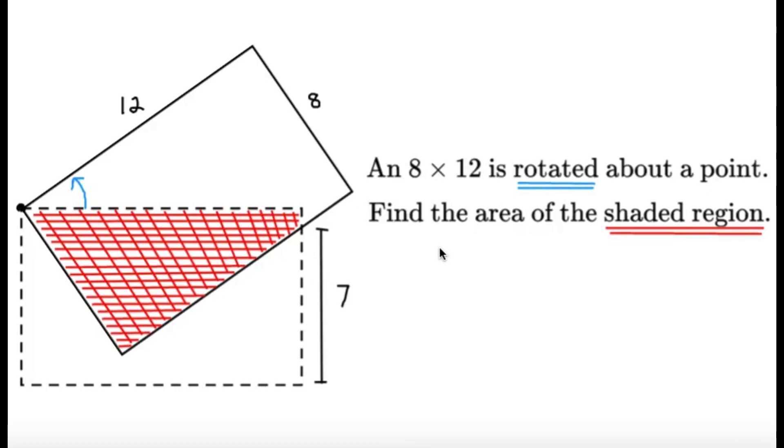Hello, hello! It's Tumplet here. Here's an item on geometry. An 8x12 rectangle is rotated about a point. Find the area of the shaded region.